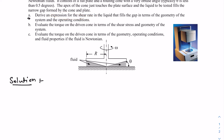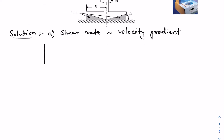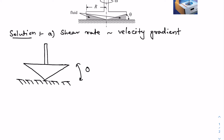Shear rate is nothing but the velocity gradient in the fluid. I'll sketch the schematic again: there is the plate, this is the conical section, the base, this angle is theta, this radius is R, and at a distance small r from the center, this height is h. We want to find the shear rate here, which will be just the vertical velocity gradient at that point.